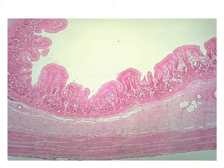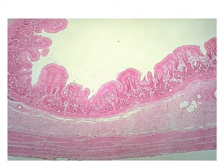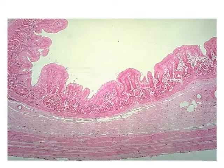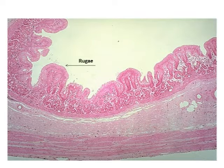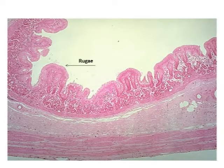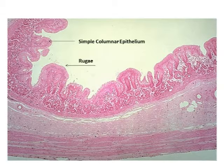Next we're going to go over the slides of your stomach fundus and the duodenum of your small intestines. This is a slide for the stomach fundus. First is the rugae. For the rugae, it is the individual fold that it's pointing to — that's one individual fold. There are several others and they all together are the rugae.